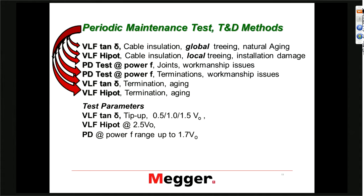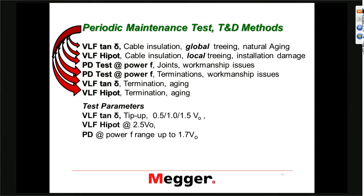For periodic maintenance tests, we can use VLF Tan Delta, typically perceived as the method of choice today to detect treeing in cable insulation, especially in XLPE cables. We can do a VLF hypot test to see cable treeing, but then it has to be at the point that it will fail — so it's not really a diagnostic test, it's more a go/no-go test. We can do a partial discharge test at power frequency to analyze joints and terminations.